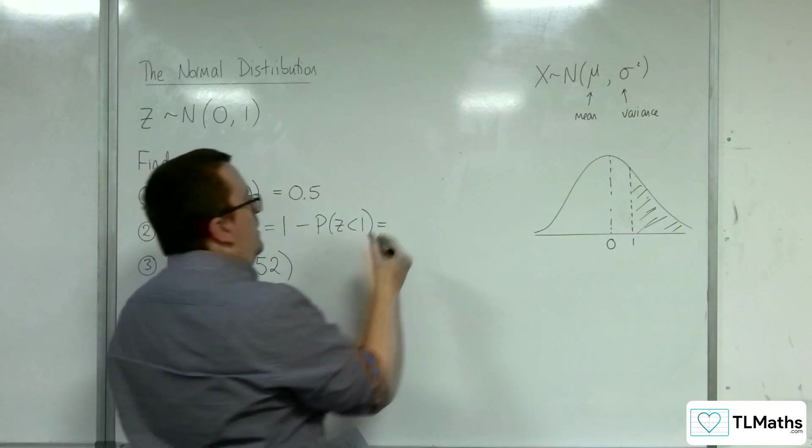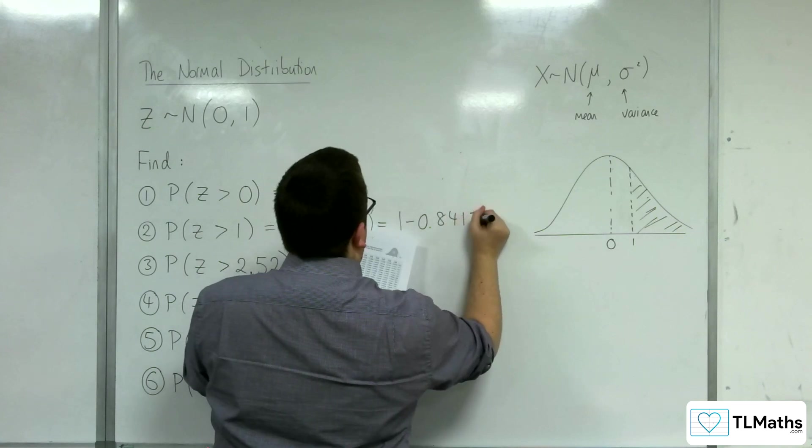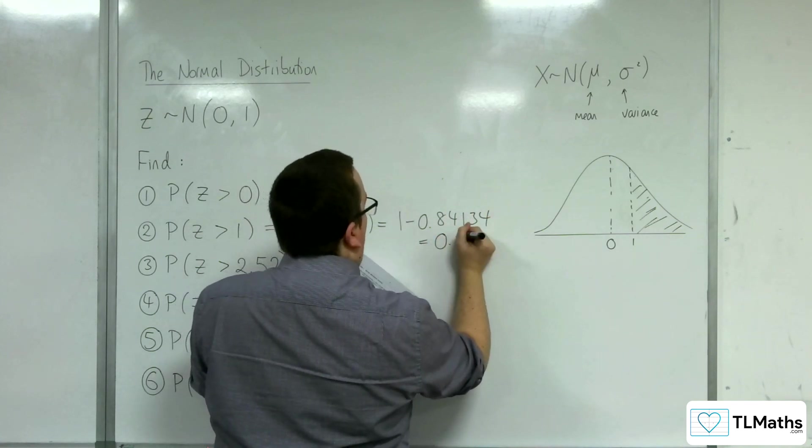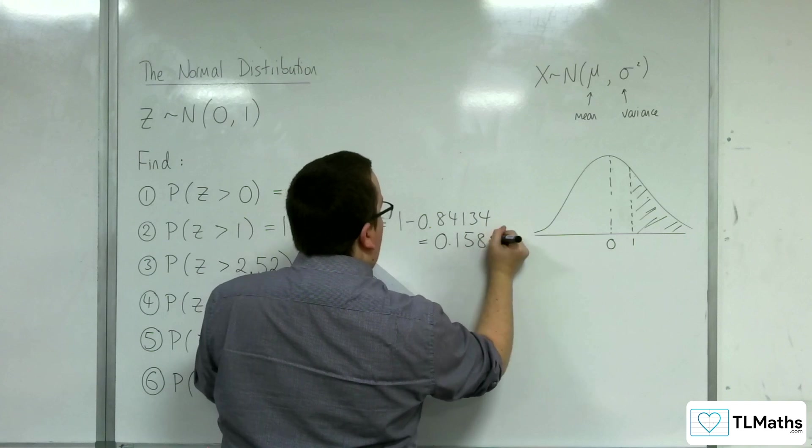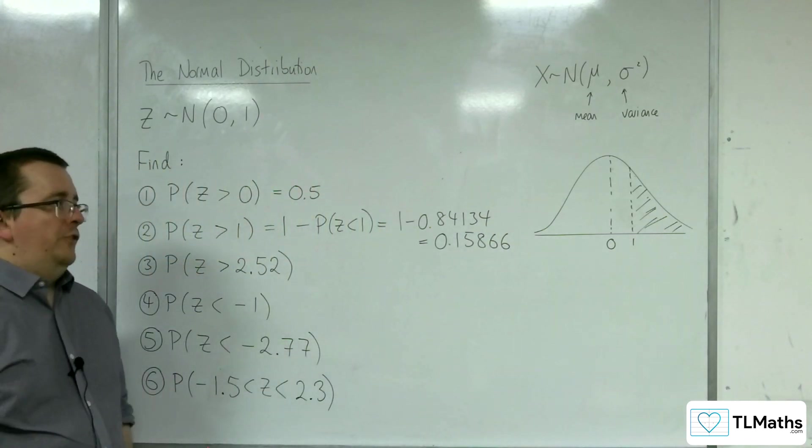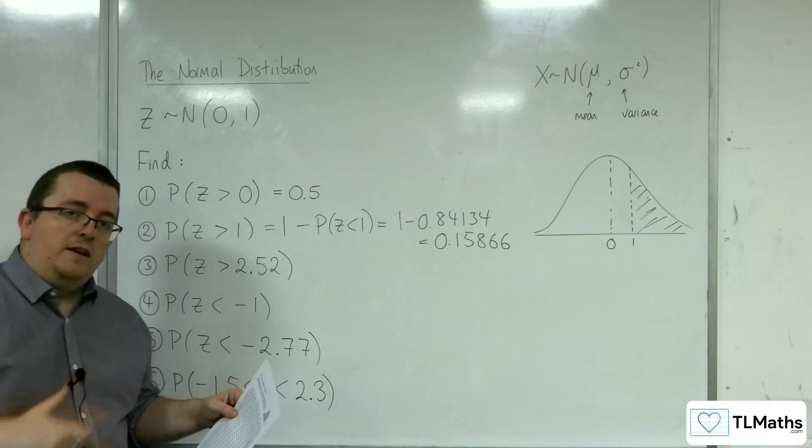So this is 1 take away 0.84134, which is 0.15866. So you've got to then think, it's 1 take away the value that is in the tables.